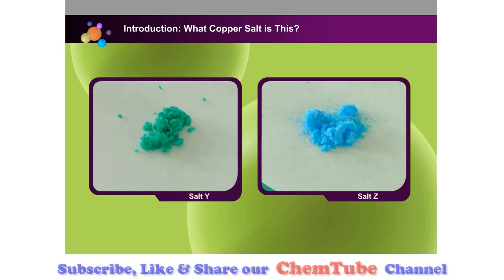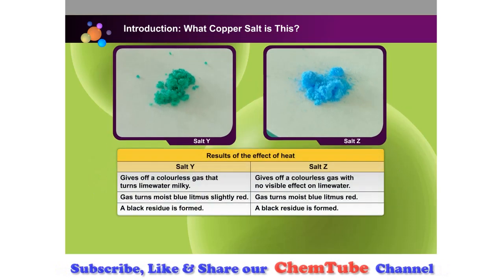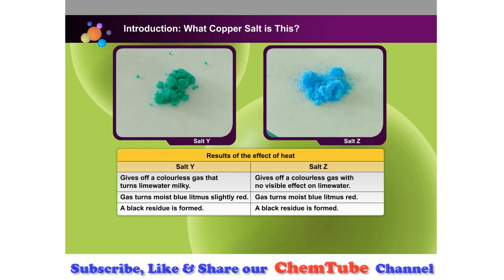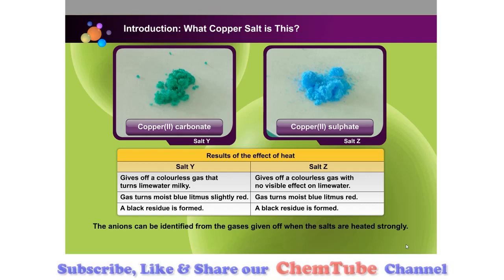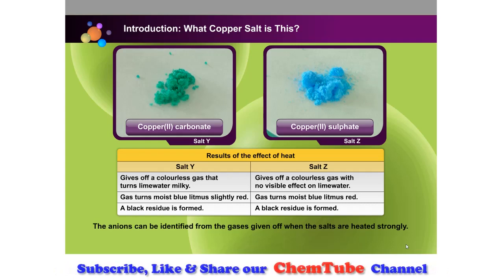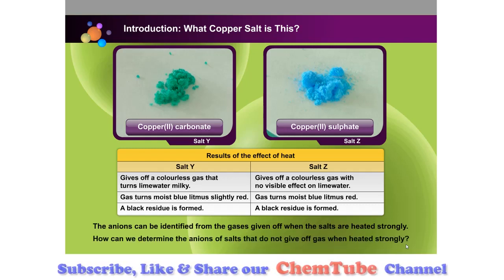Both salts were heated strongly and the observations were recorded. From the table, can you determine the identities of salts Y and Z? The anions can be identified from the gases given off when the salts are heated strongly. How can we determine the anions of salts that do not give off gas when heated strongly?